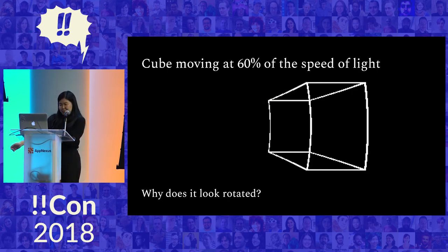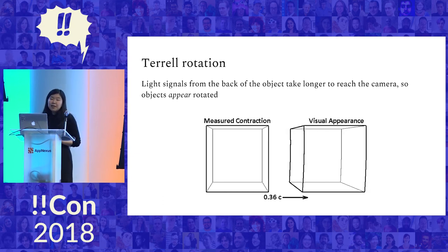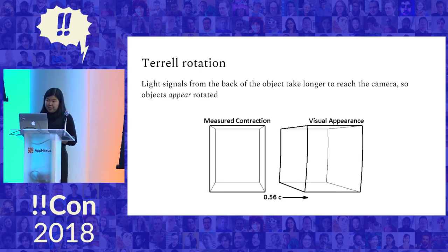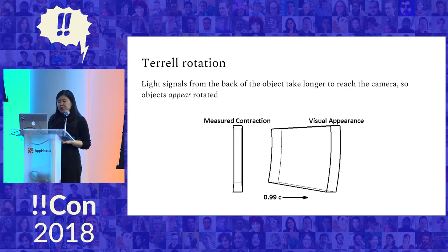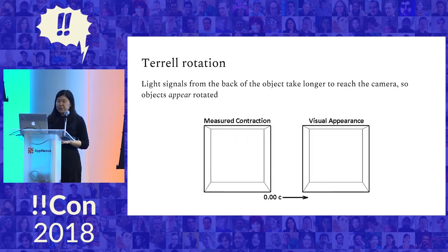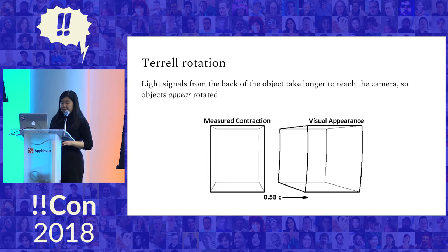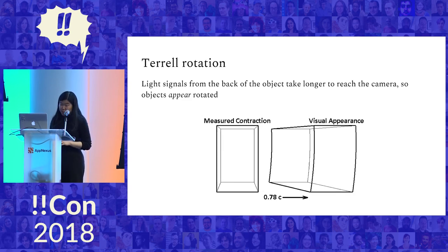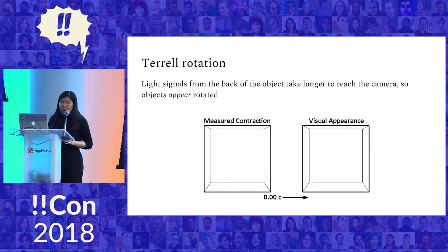I haven't rotated it at all — this is just what it looks like if you take pictures at those time slices. So why does it look rotated? It turns out there's this visual phenomenon called Terrell rotation. What's going on is that the camera is receiving light rays where signals from the back of the object take longer to reach the camera compared to signals from the front, so objects appear rotated. In this GIF, the bottom parameter shows what fraction of the speed of light you're moving at — as you move faster, the cube compresses more and more, but the apparent rotation angle also becomes more and more extreme.